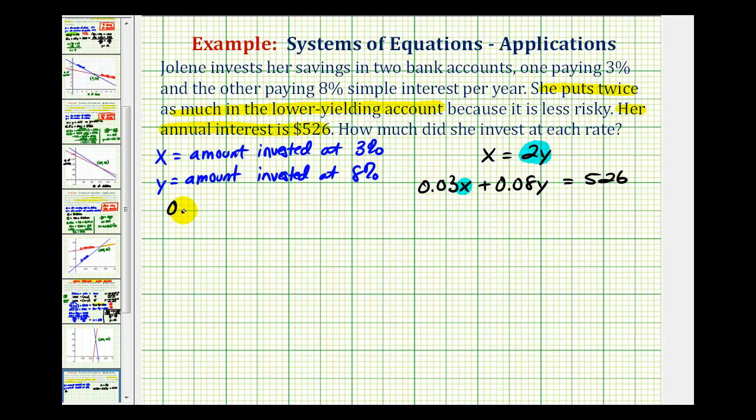We would have 0.03 times 2y plus 0.08y equals 526. This product here is going to be 0.06y plus 0.08y equals 526. Now if we wanted to, we could eliminate these decimals by multiplying both sides of the equation by 100, which is equivalent to moving the decimal point to the right two places. But since we're going to use the calculator, we'll go ahead and leave it as a decimal. This sum here would be 0.14y equals 526.